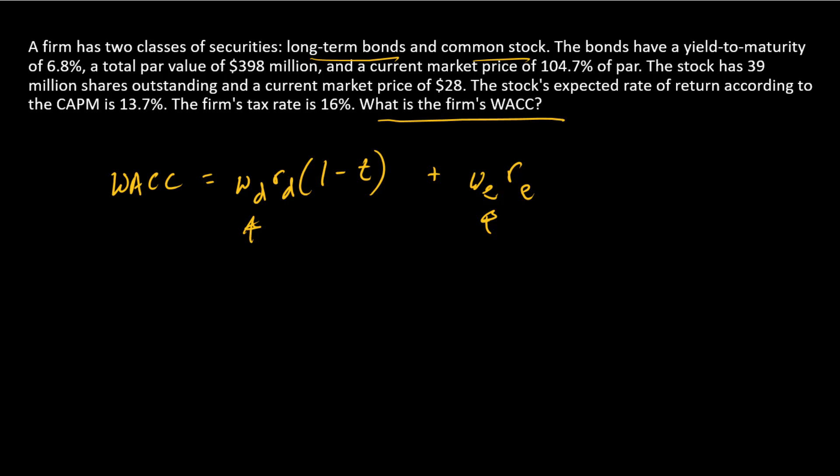The weights are always going to be based on the market values of the two components. And so we can quickly, with the information given here, calculate those two market values and the weights. So we'll get started with that first. So the debt, cap D, that's going to be the market value of the debt.